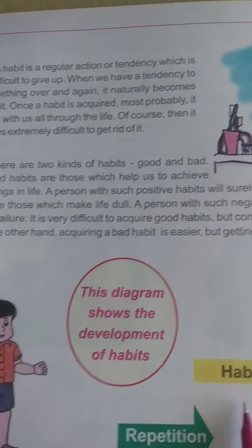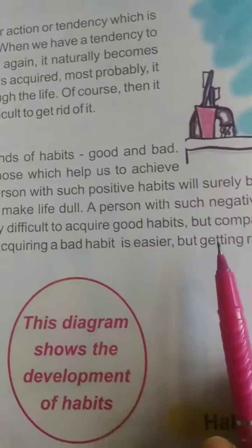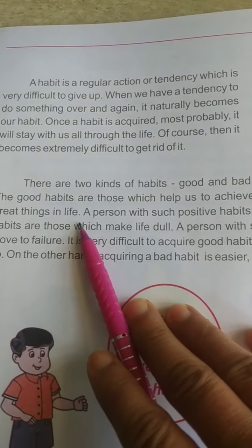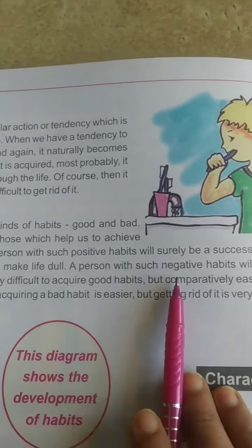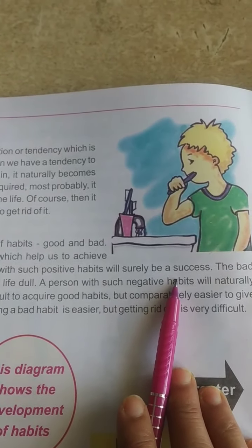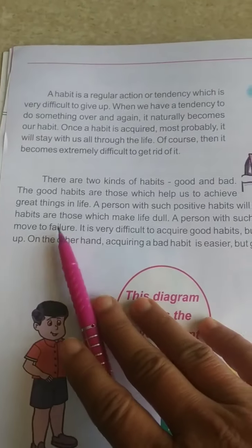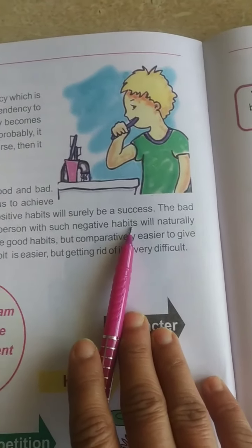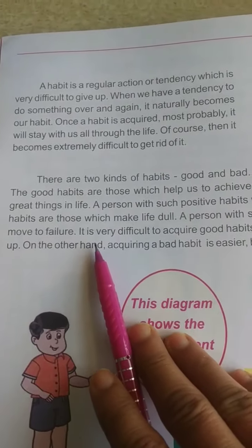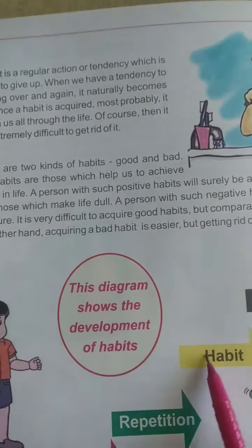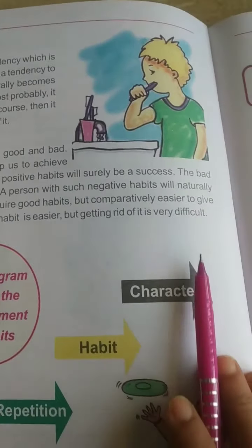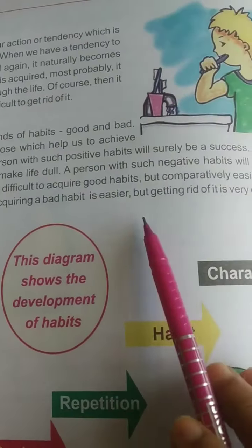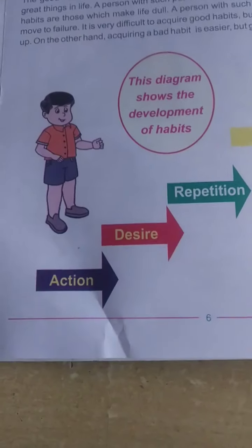There are two kinds of habits: good and bad. Good habits are those which help us to achieve great things in life. A person with positive habits will surely be successful. Bad habits are those which make life dull. A person with negative habits will naturally move toward failure. It is difficult to acquire good habits but comparatively easier to give them up. On the other hand, acquiring a bad habit is easier but getting rid of it is very difficult.